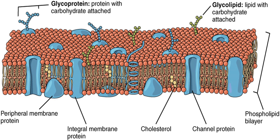In the membrane, oligosaccharides can be covalently bound to lipids to form glycolipids or covalently bound to proteins to form glycoproteins. The sugar groups of glycolipids are exposed at the cell surface, where they can form hydrogen bonds, providing the most extreme example of asymmetry in the lipid bilayer. Glycolipids perform a vast number of functions that are mainly communicative, including cell recognition and cell-cell adhesion. Glycoproteins are integral proteins that play an important role in the immune response and protection.